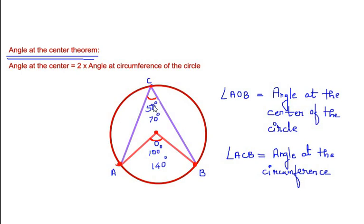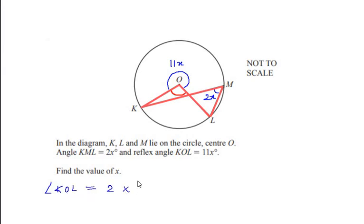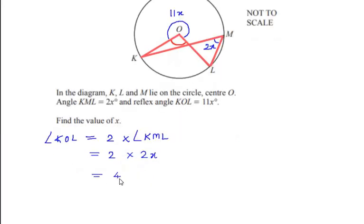Let us see how we can use this theorem to solve the given example. K and L are the two points on the circle and they make an angle at the center KOL. These two points also make an angle at the circumference at point M. So angle at the center KOL is two times the angle at the circumference KML. We have the angle at the circumference given as 2x, so two times 2x gives us the angle at the center as 4x. So angle KOL equals 4x.